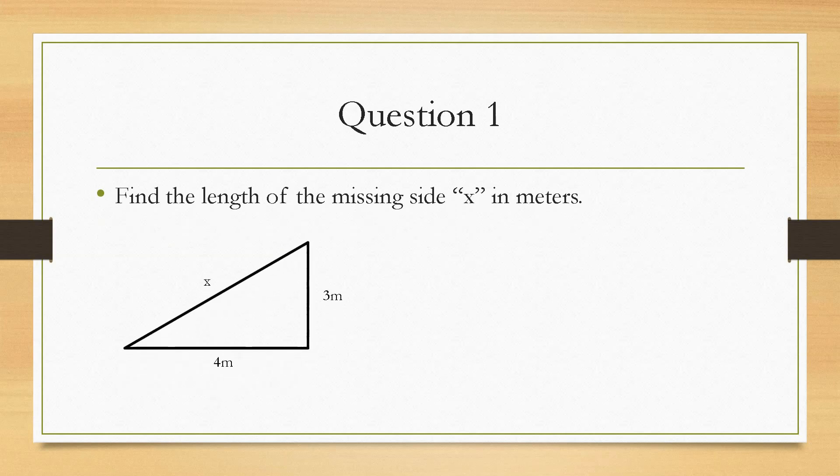If we take a look at question 1. Question 1 asks us to find the length of the missing side x in metres and it gives us this right angle triangle.